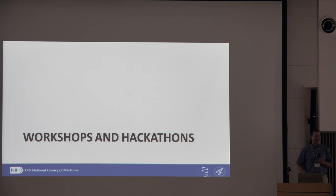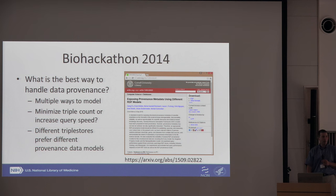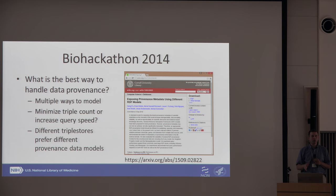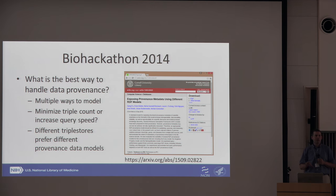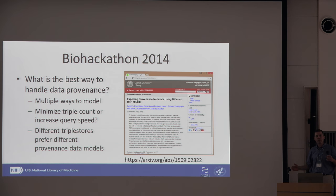We're here at a hackathon, and it's really one of a number of meetings we attend as we try to engage the community. At our first biohackathon, we looked at the best way to handle data provenance. We worked with Michel Dumontier, among others. One thing we found is that when you're trying to describe provenance — because PubChem has so much provenance content — the optimal way to express it within RDF varies. Different triple stores prefer different provenance data models, and sometimes more triples can actually be faster to query and access.